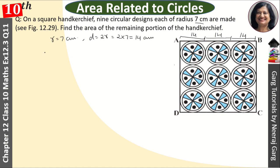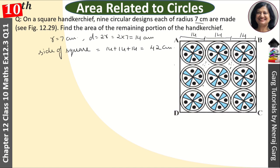So this square — how much is the side of the square? 14 + 14 + 14 = 42 cm. Now, on a square handkerchief 9 circular designs each of radius 7 cm are made. Find the area of the remaining portion. This white portion is the area we need, and the circles are the area we need to remove.